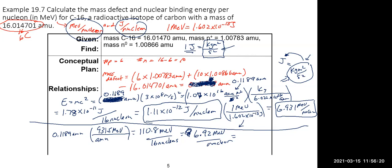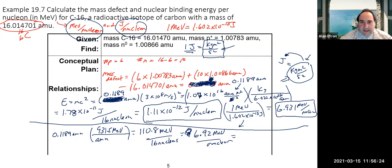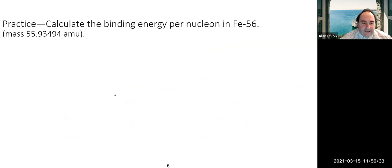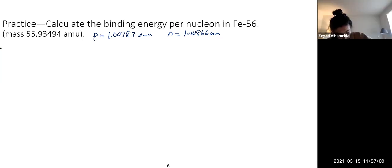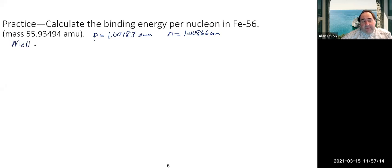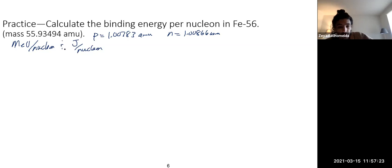Let's try another example: calculate the binding energy for iron-56. The proton mass is 1.00783 amu, the neutron mass is 1.00866 amu. Let's do both mega electron volts per nucleon and joules per nucleon again. Generally, if a problem specifies which unit to use, go with that; if not, both MeV per nucleon and joules per nucleon are common.